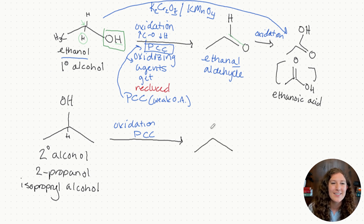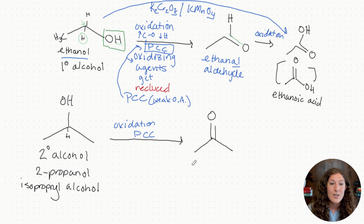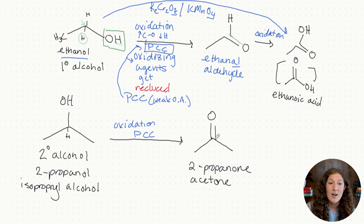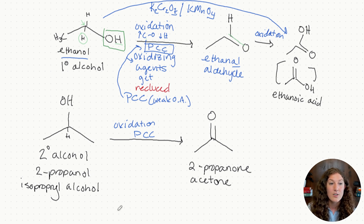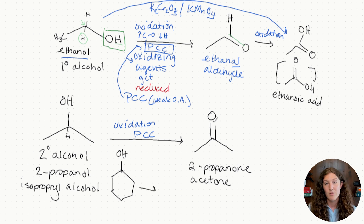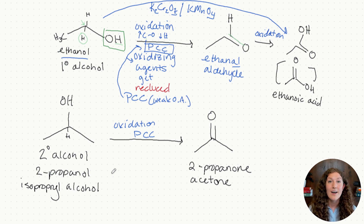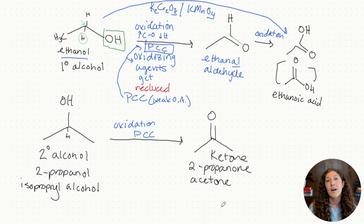If you said a ketone, you are absolutely correct — this is a carbonyl group, a ketone functional group. This is 2-propanone, also known as acetone. For this product, the central carbon has already lost all of its hydrogens, so it cannot get oxidized any further. For a secondary alcohol, we're going to stop at a ketone. This is true for many types of secondary alcohols, including ring-based structures. We're going to produce a ketone, and that's it — there are no more hydrogens to lose. Ketone is our final product of the oxidation of a secondary alcohol, no matter where we start.